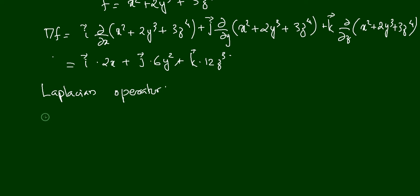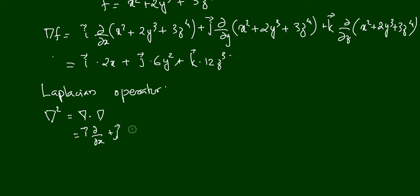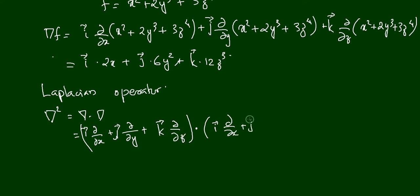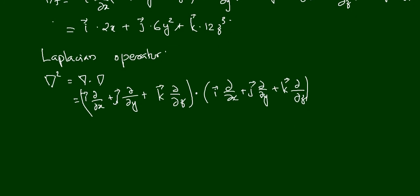The Laplacian operator is defined as del squared, or more precisely, del dot del. Since del is a vector operator, we are taking the dot product of del with itself: (i ∂/∂x + j ∂/∂y + k ∂/∂z) dot (i ∂/∂x + j ∂/∂y + k ∂/∂z).